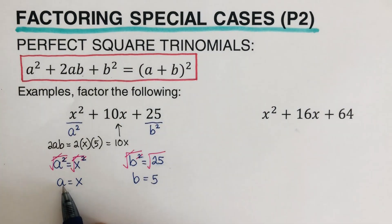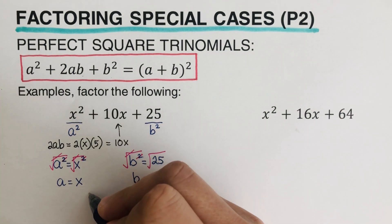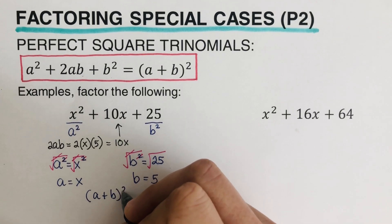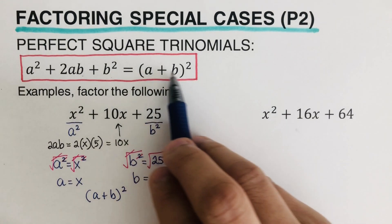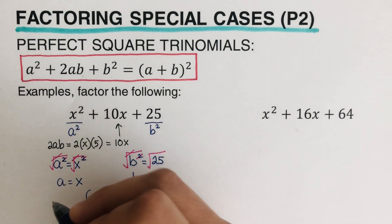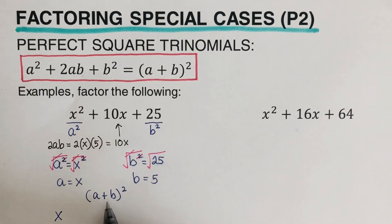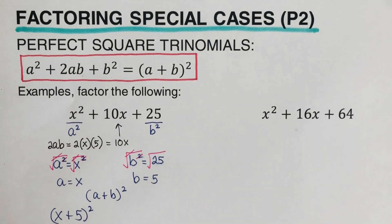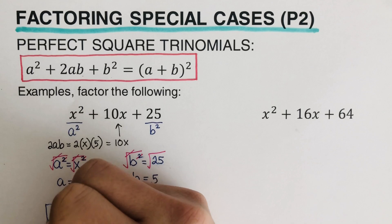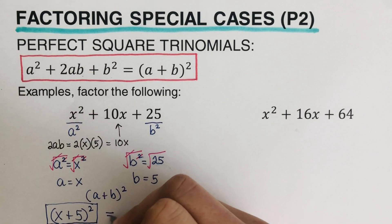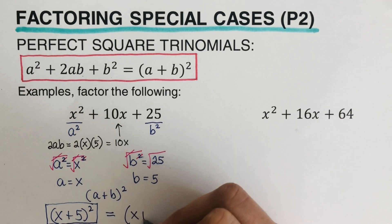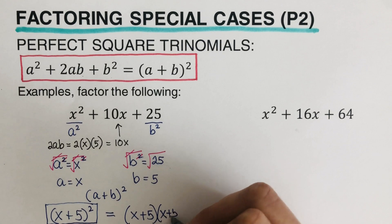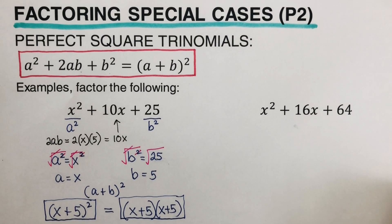We can now write it in factored form. Following the general form (a + b) squared, since a is x and b is 5, the factored form is (x + 5) squared. This can also be written as (x + 5)(x + 5). If you use the FOIL method or area model, you will get back the original expression.